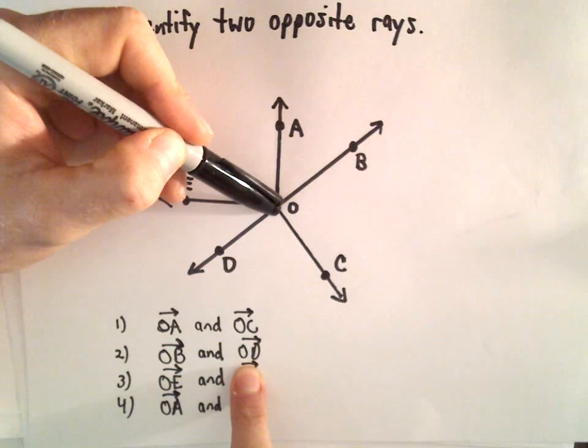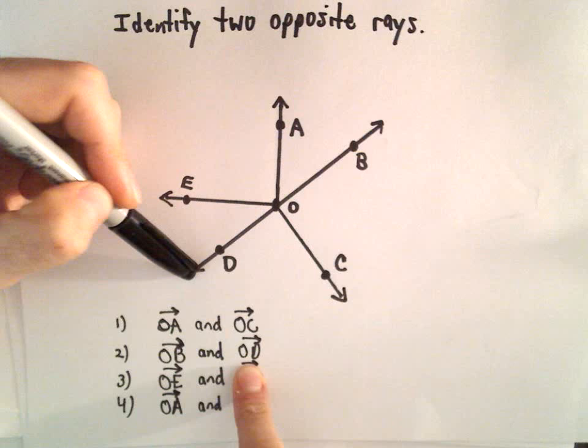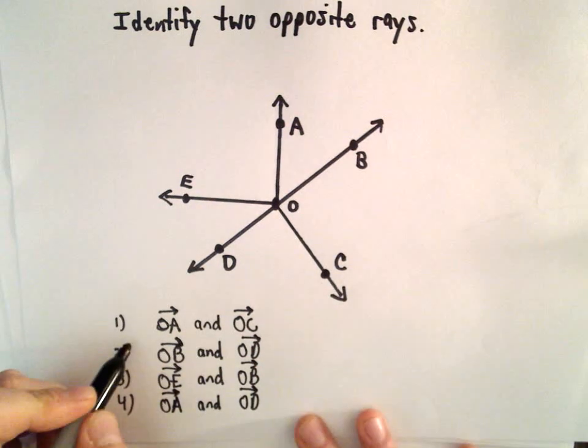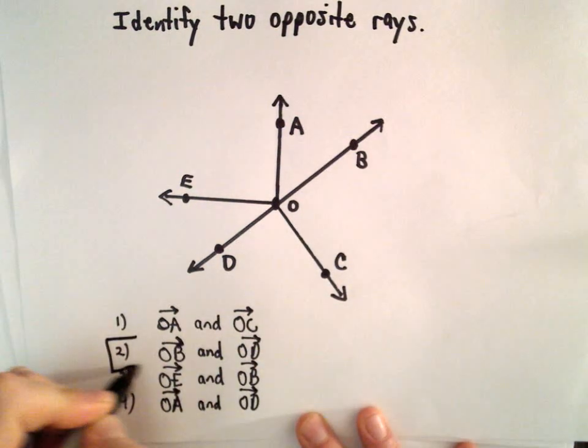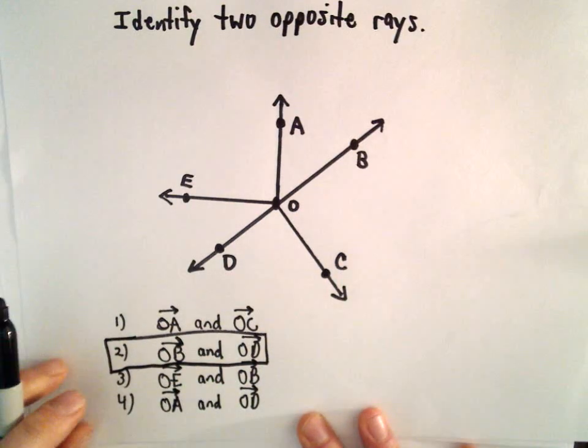We've got OB and OD. Well, those share a point and they do form a straight line going in opposite directions, so certainly it looks like answer choice number two here is correct. Let's look at the other ones as well just to make sure.